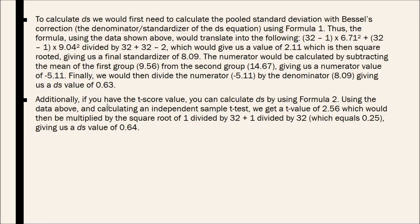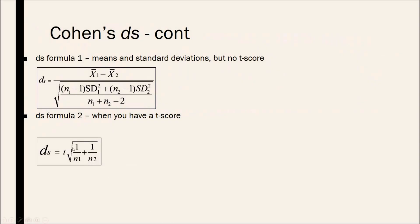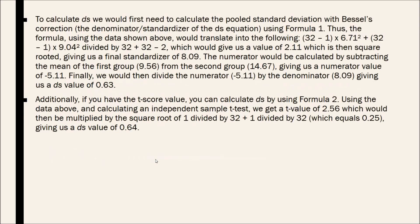And additionally, like I said, if you have the t-score value, you can calculate the DS by using formula 2, which is simply the t-score times the square root of 1 divided by the sample size plus 1 divided by the sample size, which gives us 0.25. And the t value would be 2.56, so times that by 0.25 gives us a DS value of 0.64, which is slightly higher, but not too much difference than the other formula.